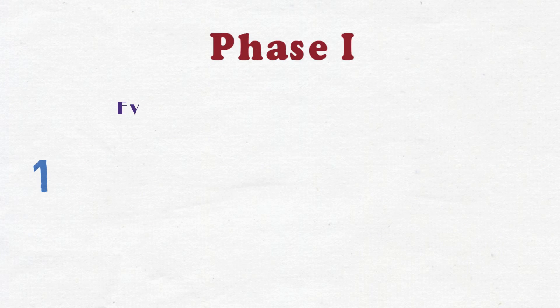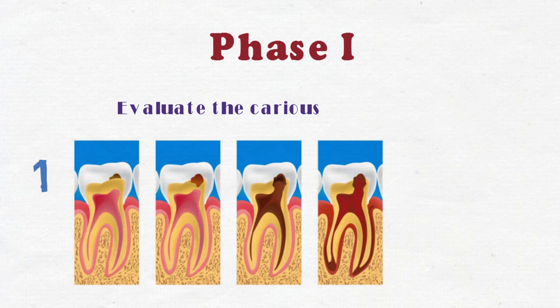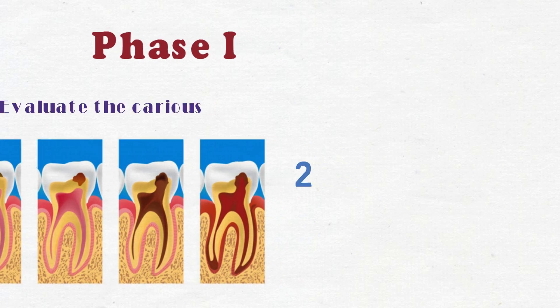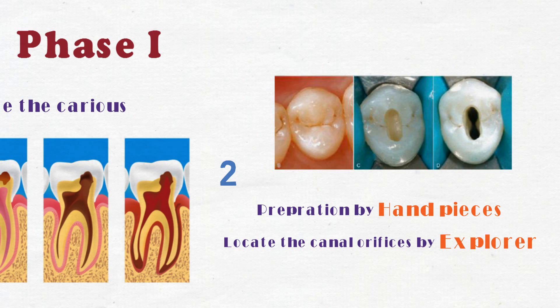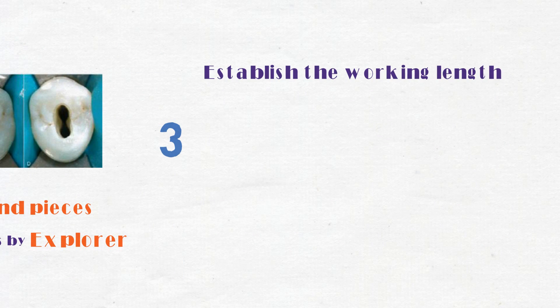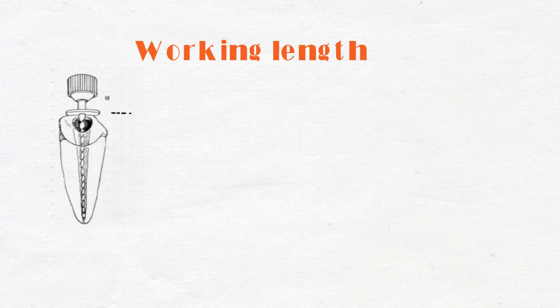Phase one: evaluate the carious tooth before initiating the endodontic treatment. Prepare the access cavity and locate the canal orifices. Establish the working length of the tooth using the pathfinder. The working length is the distance between the reference point coronally and the anatomic apex.